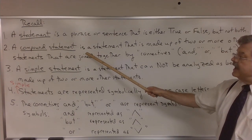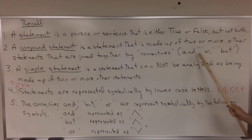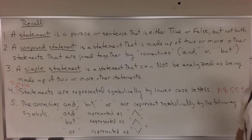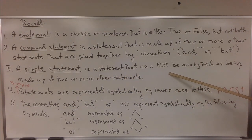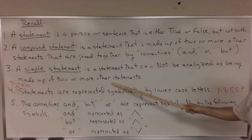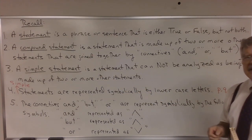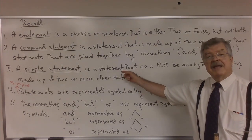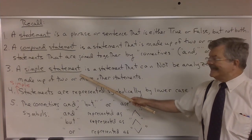A compound statement is a statement that is made up of two or more other statements that are joined together by connectives — words such as 'and,' 'or,' or 'but.' A simple statement is a statement that cannot be analyzed as being made up of two or more other statements. A simple statement expresses one thought.